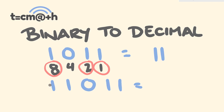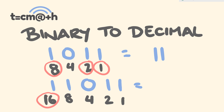For this number here, we write 1, 2, 4, 8, 16 underneath. The numbers we're going to add: 16 plus 8 is 24, plus 2 is 26, plus 1 is 27.